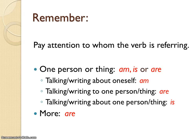When you are writing to be in simple present form, always remember to pay attention to whom the verb is referring. That means if the verb is referring to one person or thing, you use the form am, is, or are.